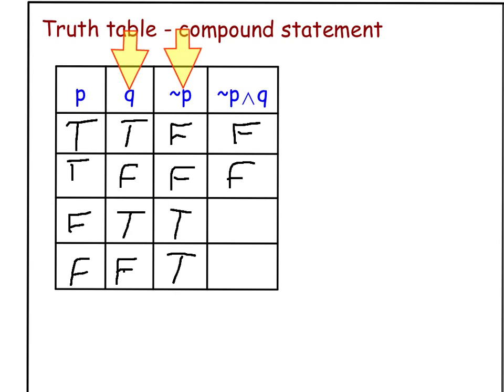When I have true and true, my conclusion is true, because they're both true, and you need both statements to be true. And again with false and true, my conclusion is false.